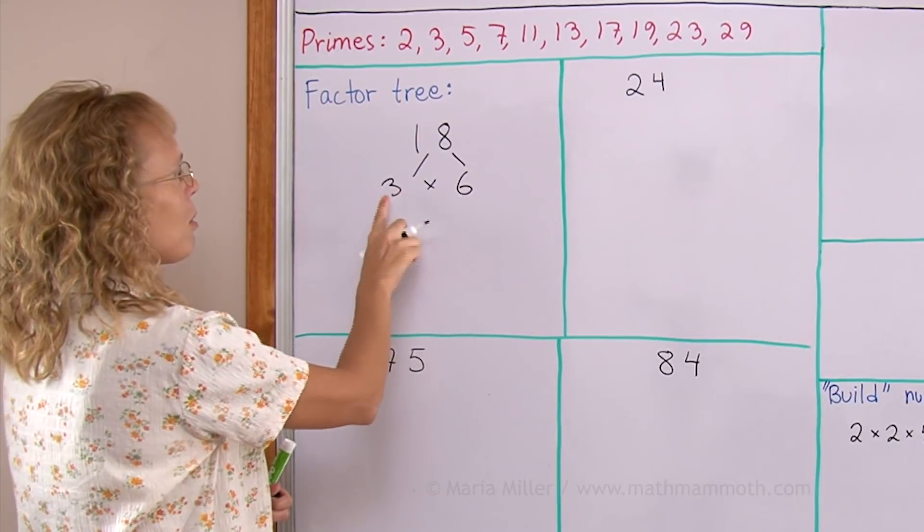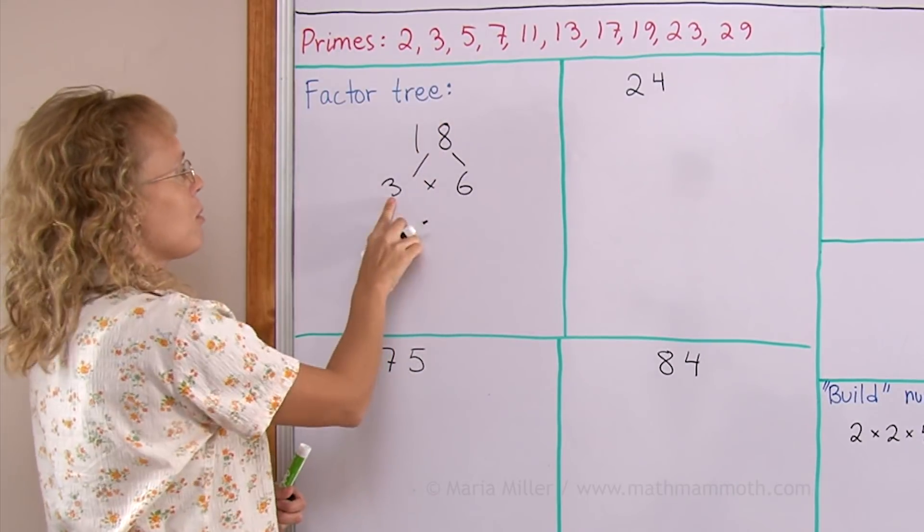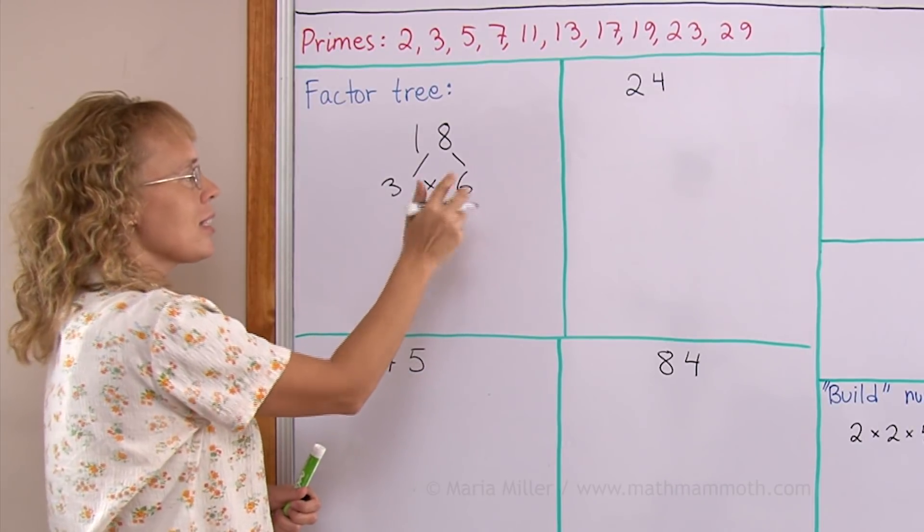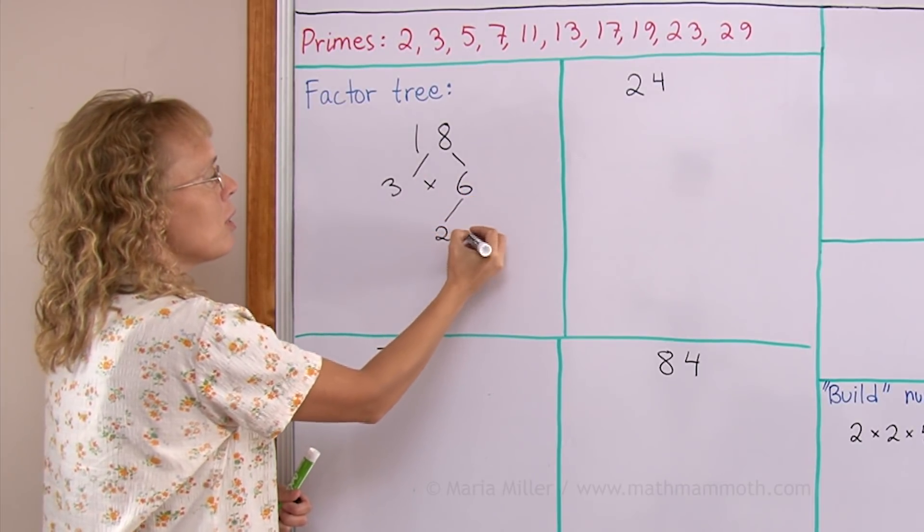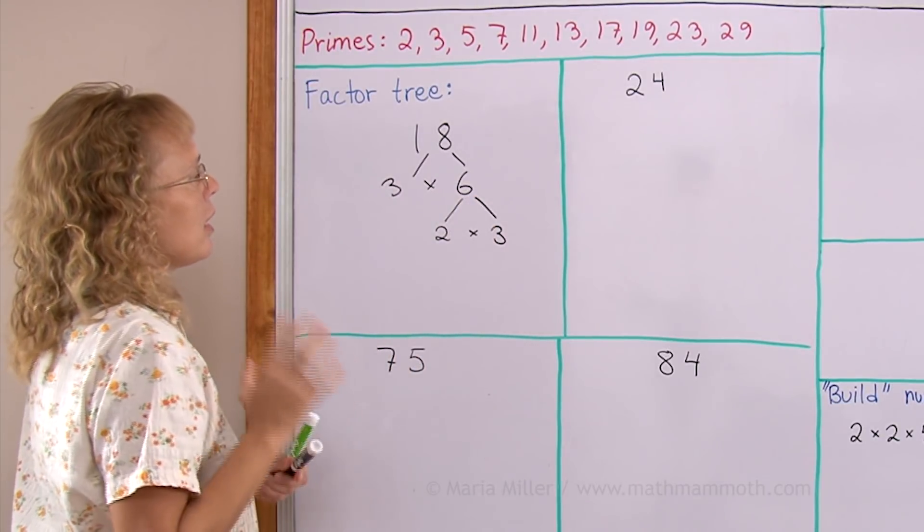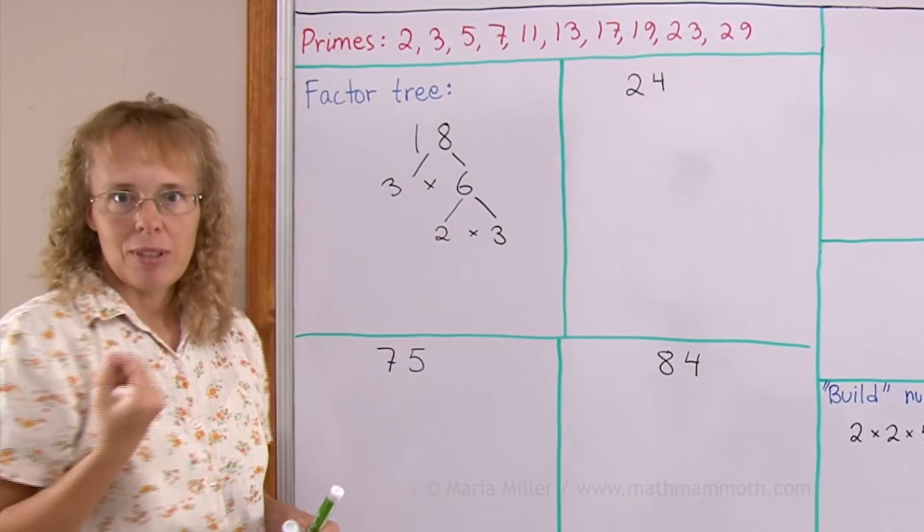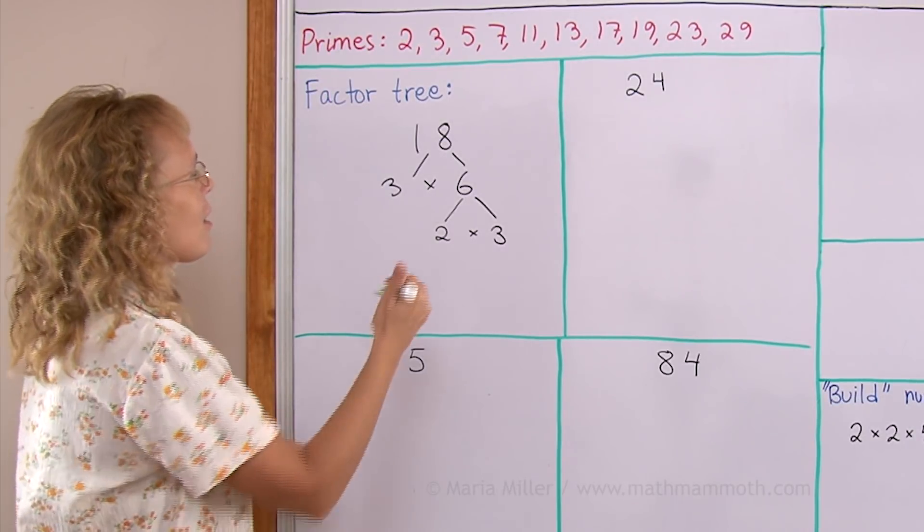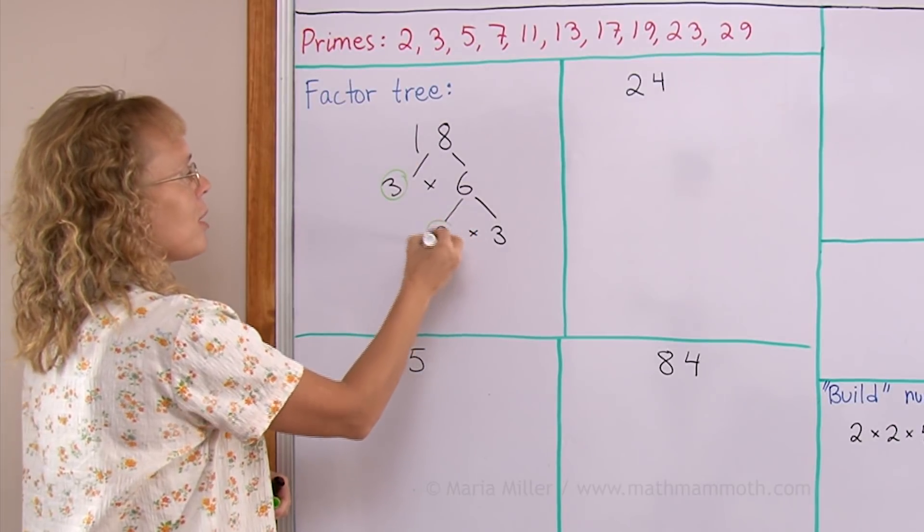I will look at 3. Well, 3 is a prime so I'll stop here. I won't go any further down. But 6 is not a prime. I can write it as 2 times 3. Now 2 and 3 are primes so I am done. Then I will pick the leaves of the factor tree. The leaves are these primes here.